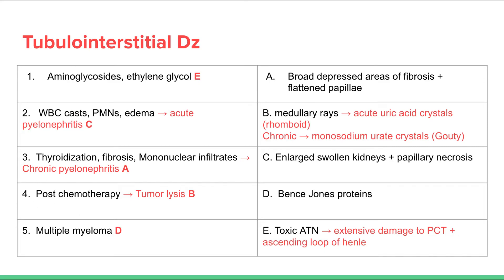Post-chemotherapy, we can get tumor lysis syndrome from all the tumor cells dying — they release a lot of uric acid. Acute uric acid crystals can give interstitial disease, collecting in the medullary rays. With chronic uric acid, we see more of a gouty appearance with tophi on gross appearance. Multiple myeloma is associated with Bence-Jones proteins.